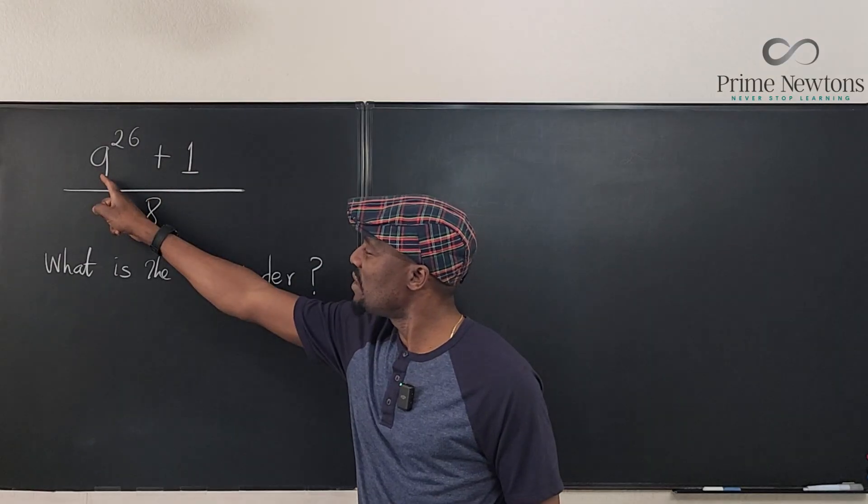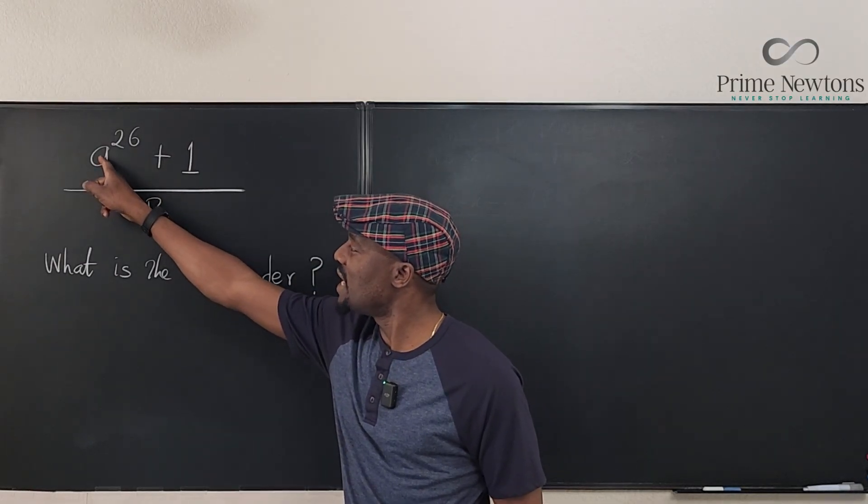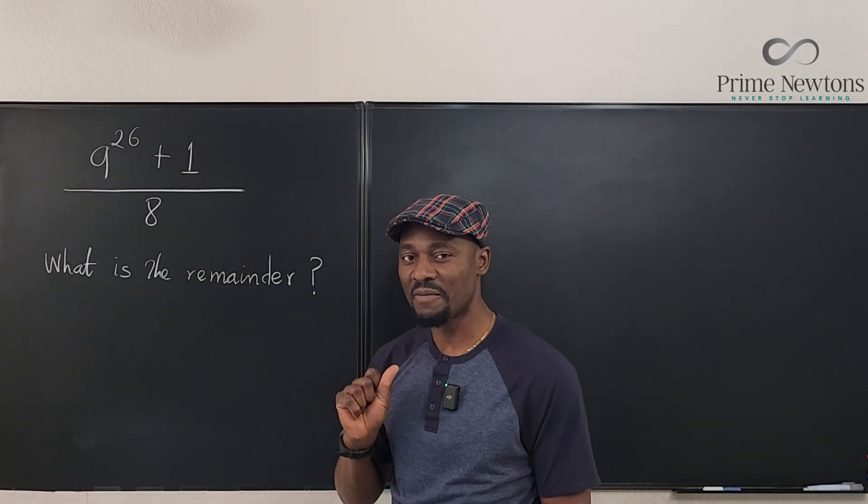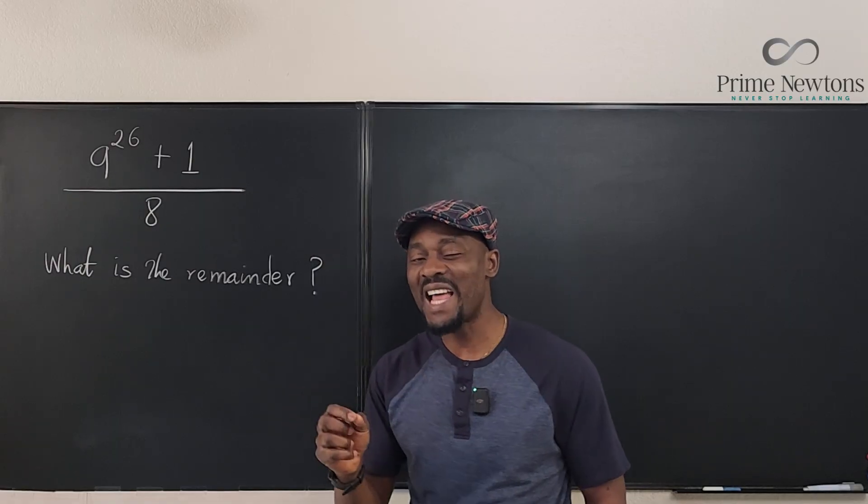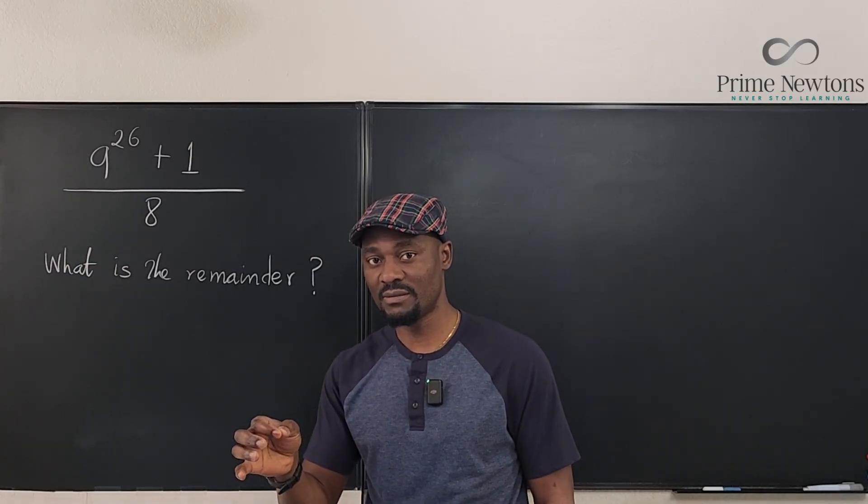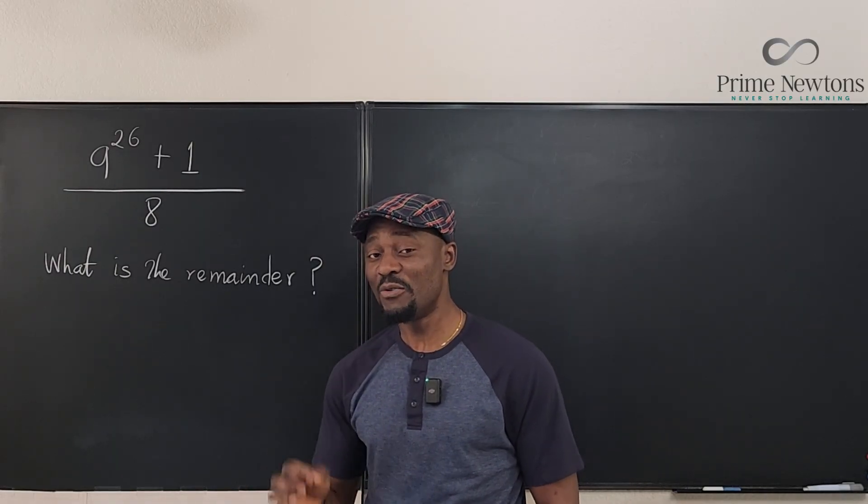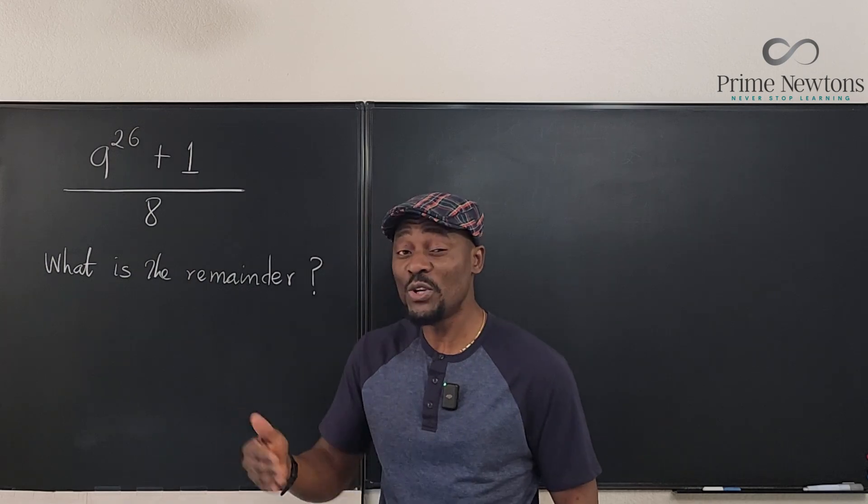So all you have to do is look at both numbers that you're given and say, what would be the remainder when I divide 9 by 8? What is that? It's going to be 1. Now that is your modulus. So the remainder you're going to get, that's all you need to work with.